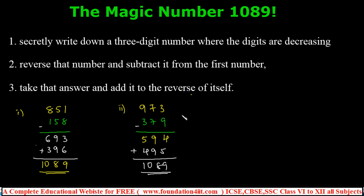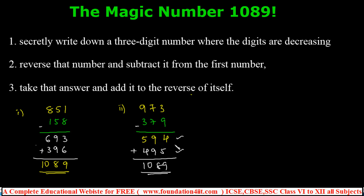Any three-digit number with decreasing digits: reverse and subtract, then reverse the result and add — you always get 1089. The reason is that when you reverse and subtract a decreasing three-digit number, the result is always a multiple of 99 (like 693, 594, 495). 1089 itself equals 99 × 11, which is a multiple of 9. This is the specialty and logic behind 1089.